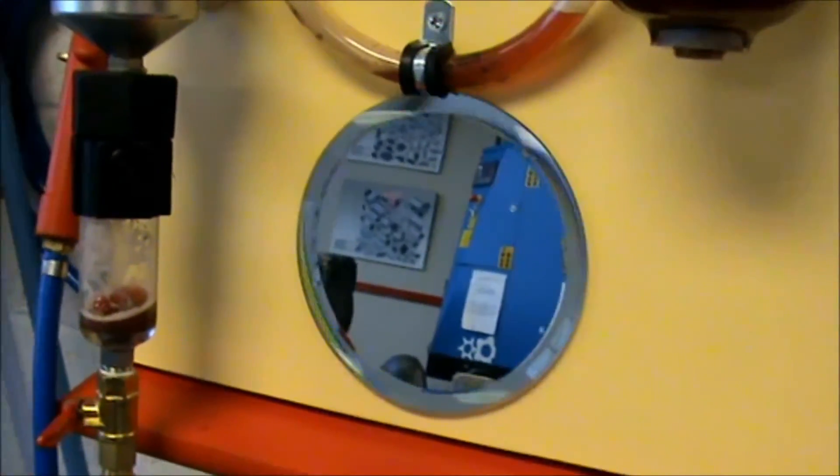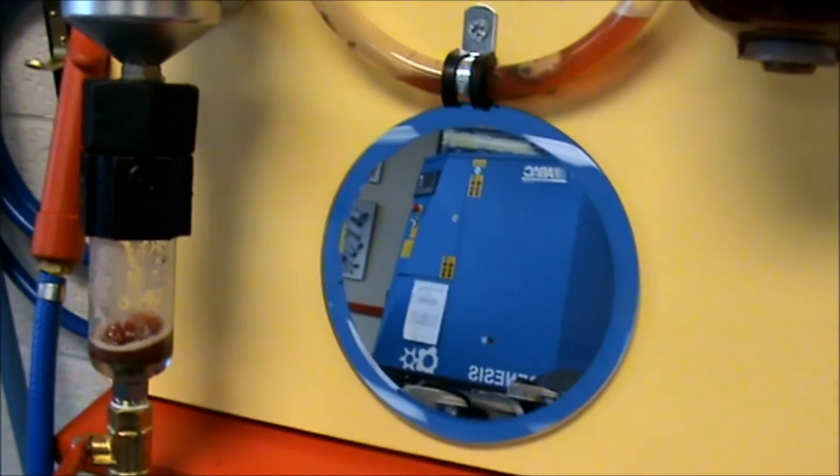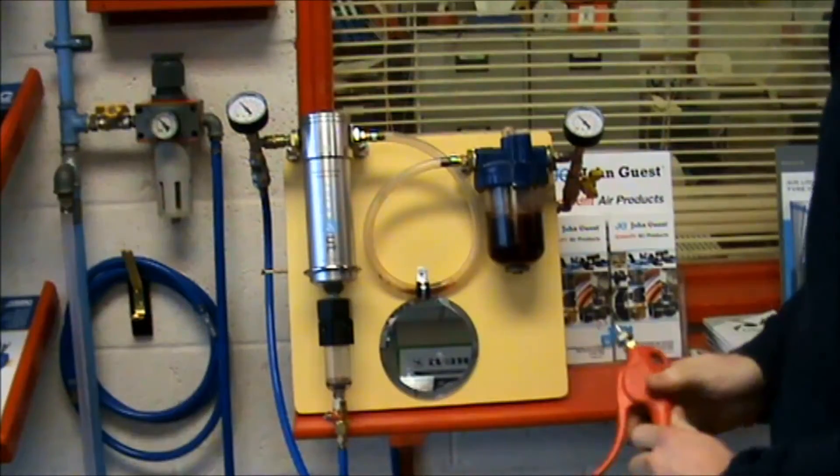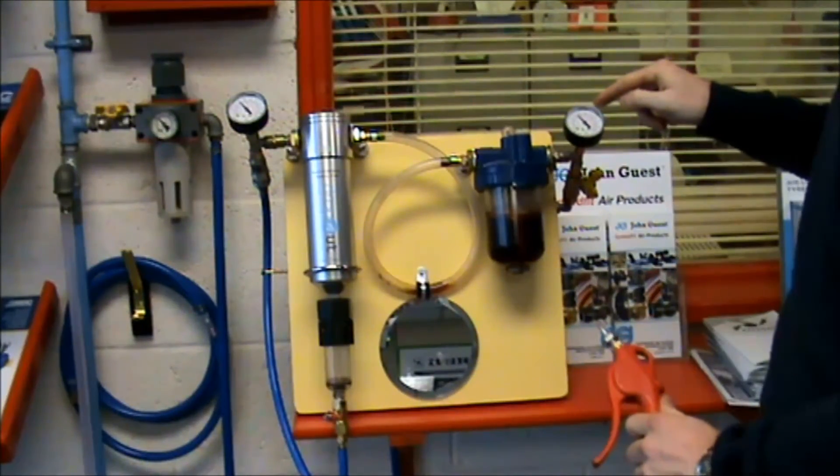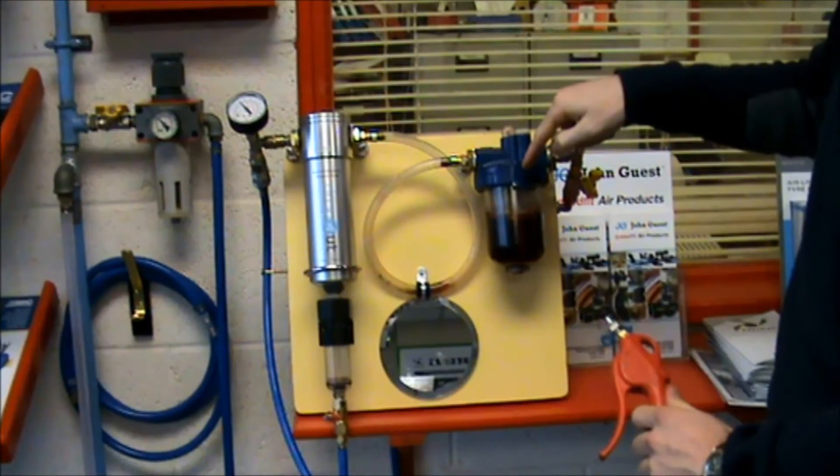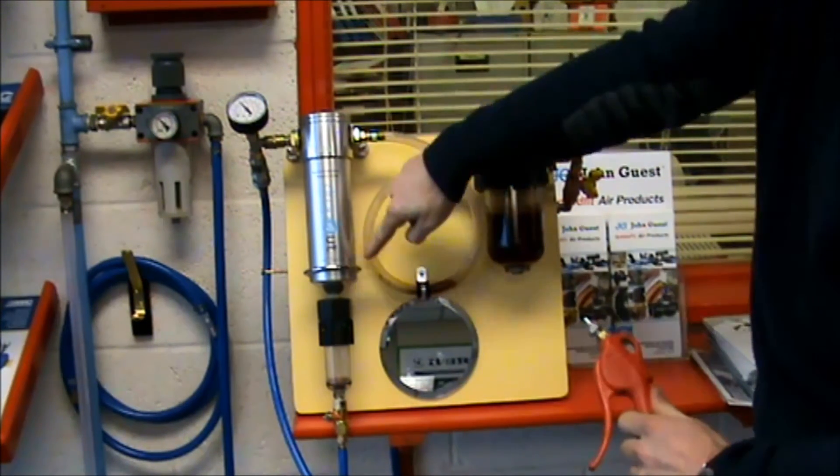For demonstration purposes there is a mirror here to show any dirt coming out of the airline. Air goes into the dirty lubricator and sends the dirty water down the line into the dropout filter.